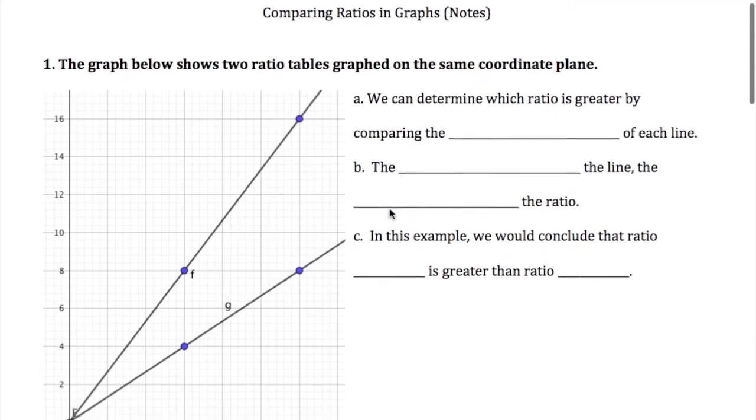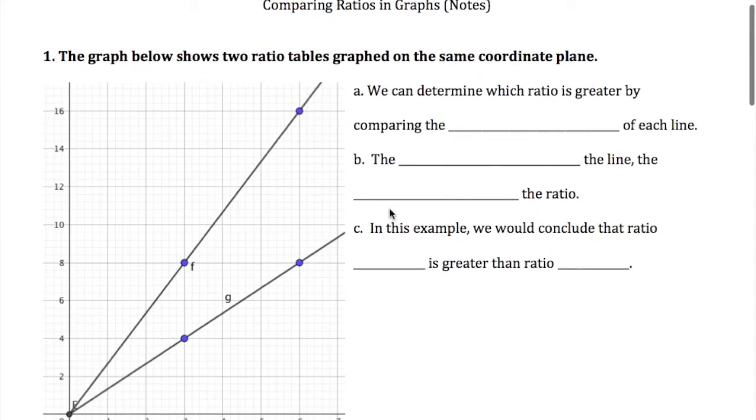Today's lesson we're going to be comparing ratios in graphs. So if we have two ratio tables that have been graphed on the same coordinate plane, we can quickly determine which ratio is greater just by visually looking at the two lines. We can determine which ratio is greater by looking at the steepness of each line.